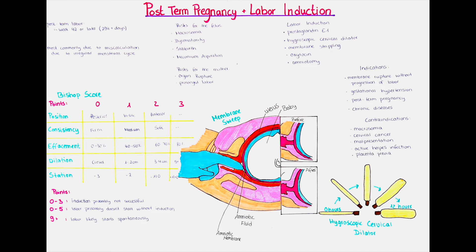Usually certain tests are done if the pregnancy continues after the due date, so at around week 42. Included in these tests is the measurement of the amniotic fluid amount and the fetal heart rate using a fetal monitor in a non-stress test. Here, a device using ultrasound is placed and fixated on the mother's abdomen to measure the fetal heart rate for around 20 to 30 minutes. The average heart rate should be between 110 and 160 beats per minute, and there should be increases of minimum 15 beats per minute for 15-second intervals during the whole duration of the test. Also, an ultrasound examination is usually done to see the baby's activity and any signs of fetal post-maturity syndrome or abnormalities, checking fetal movements, breathing movements, muscle tone of the extremities and spine, and the amniotic fluid amount.